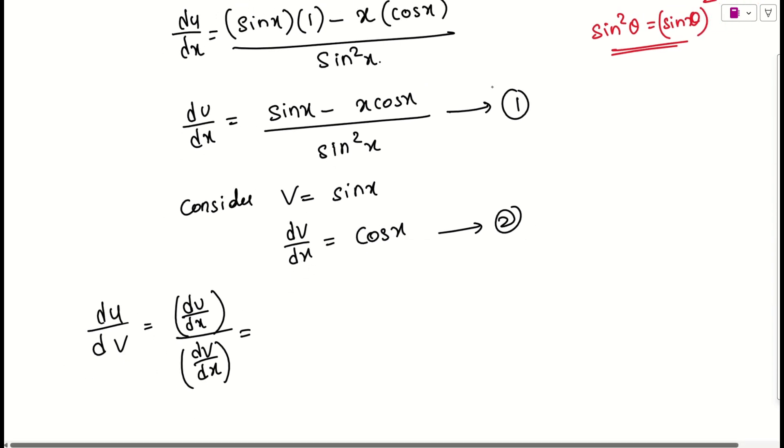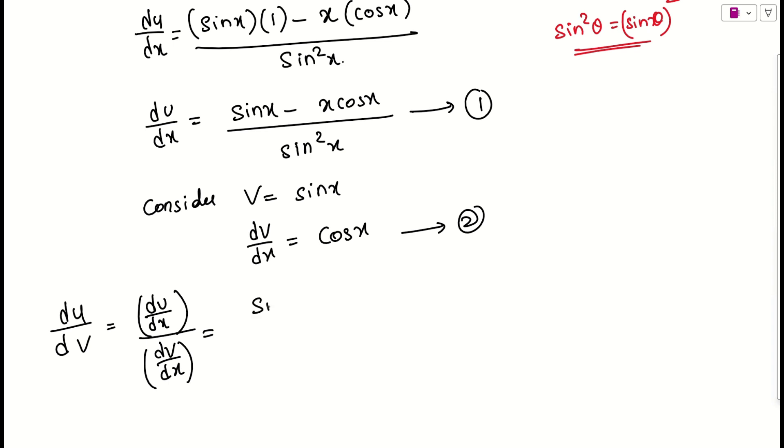What is du by dx with respect to the first equation? I can write it as sin x minus x cos x by sin square of x. Whole thing you have to divide by cos x.